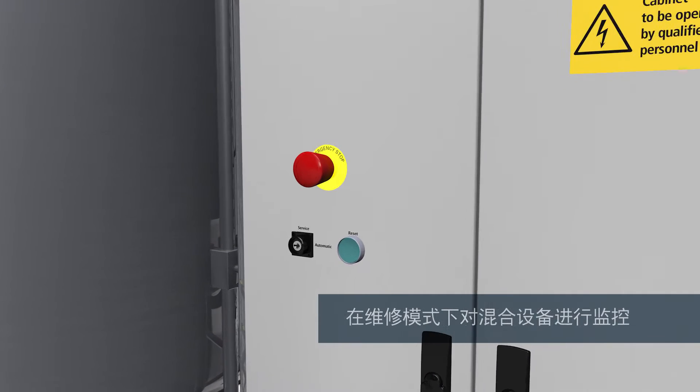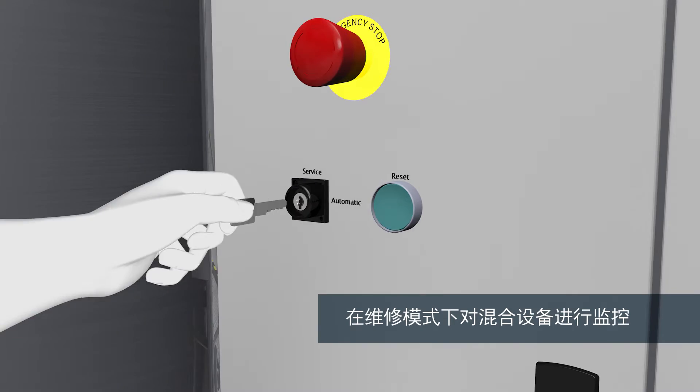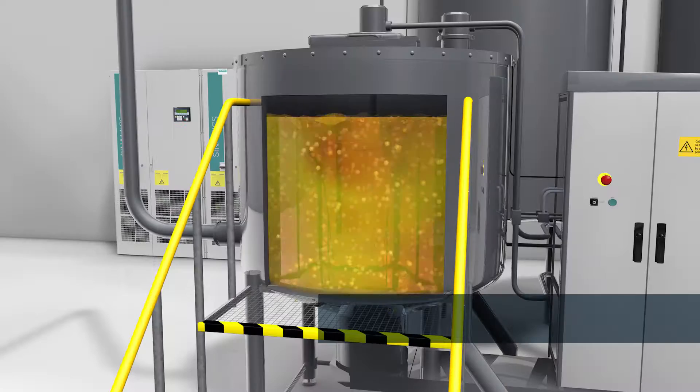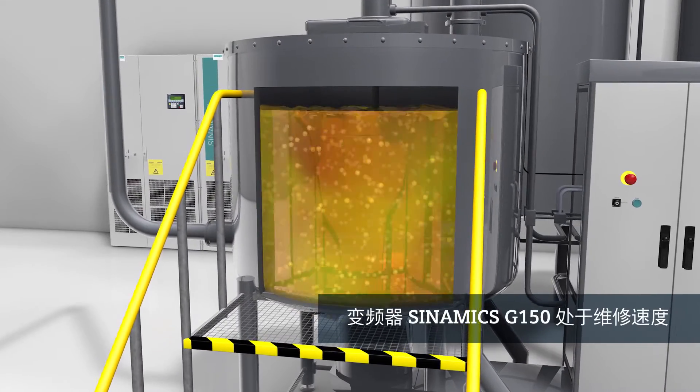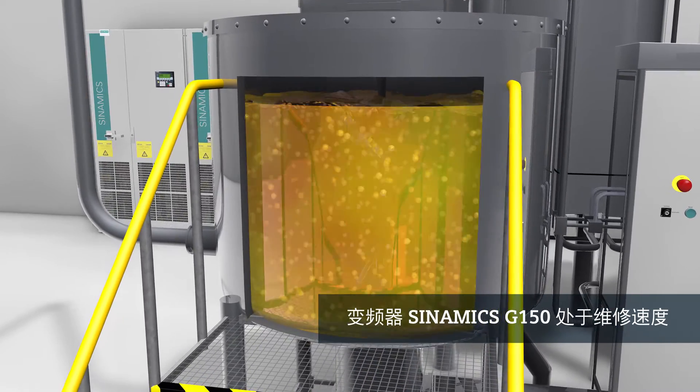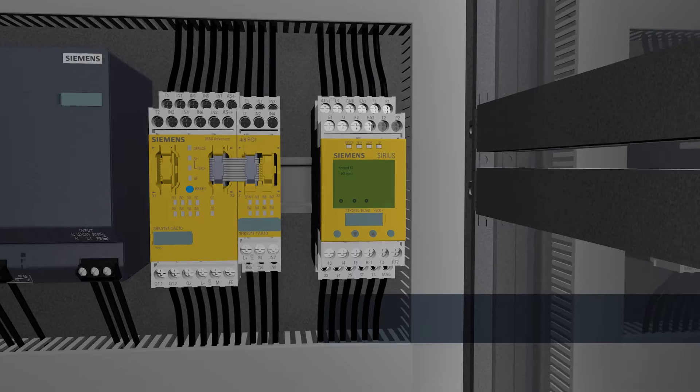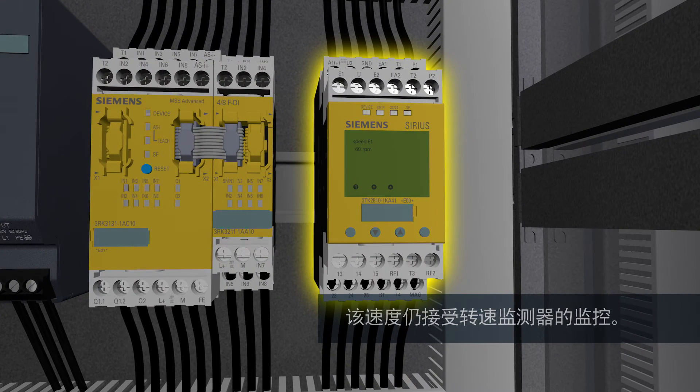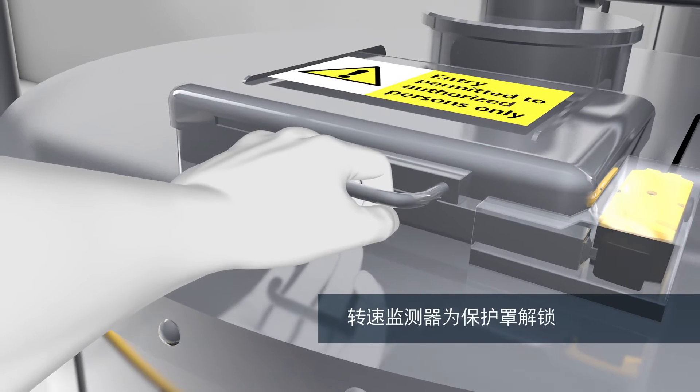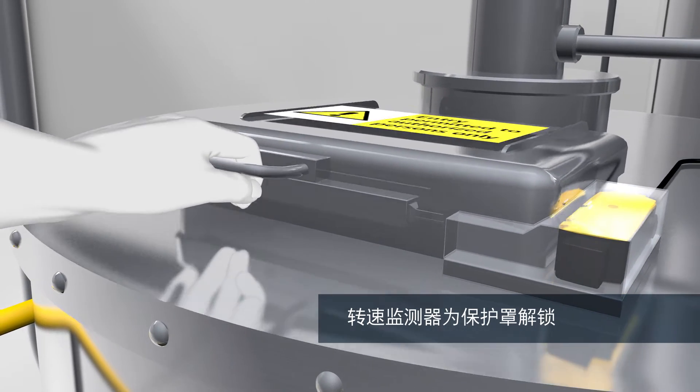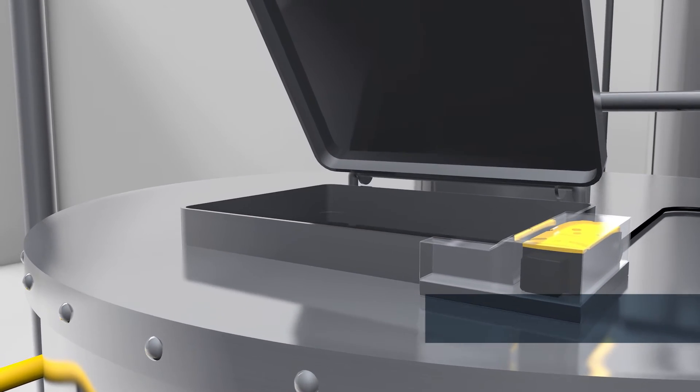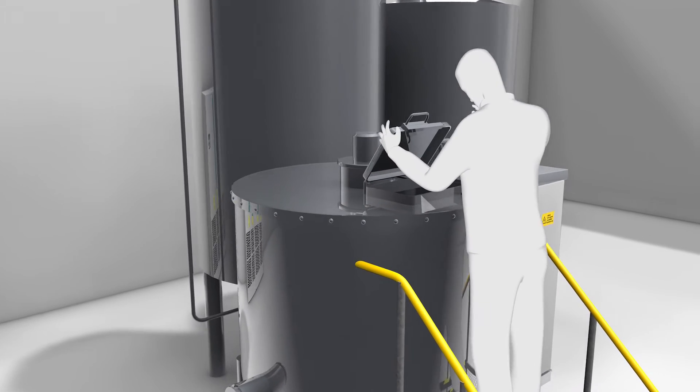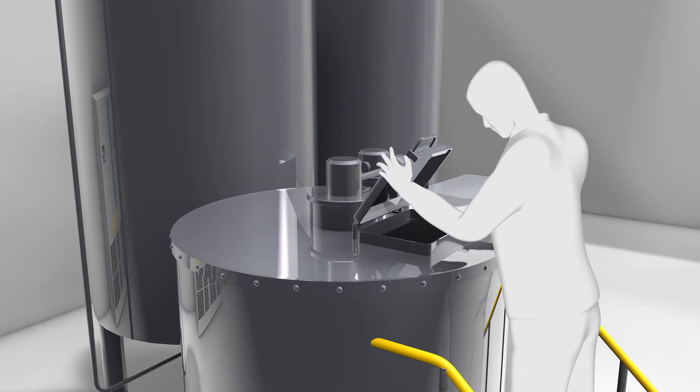When authorized personnel switch from automatic to service mode using the key switch, the system goes to the specified slow service speed. This too is monitored by the speed monitor. Only when service speed has been reached does the speed monitor enable the tumbler via the position switch, allowing the cover to be opened. An authorized employee can now check the blending process.